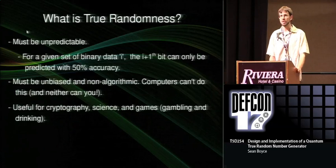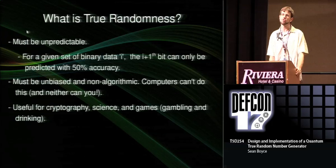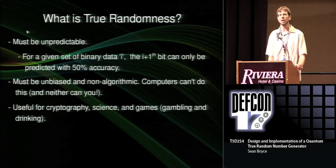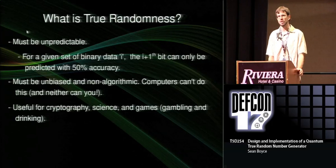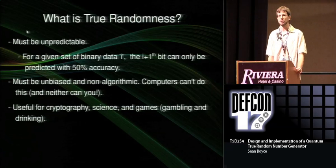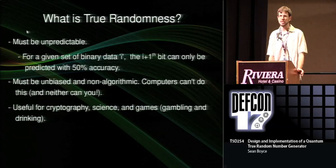We have to start with a description of what true randomness is. The take-home lesson is that true random data is unpredictable. And what this means is that if you have any amount of true random data, an arbitrary amount of processing power and time, and perfect knowledge of how it was generated, you cannot predict the next bit with better than chance. And to meet this gold standard, your data has to be unbiased and not produced by an algorithm.